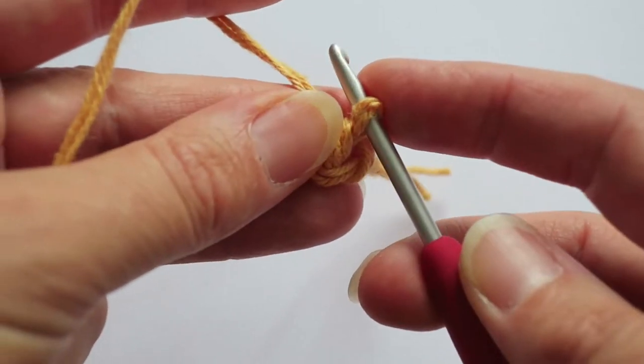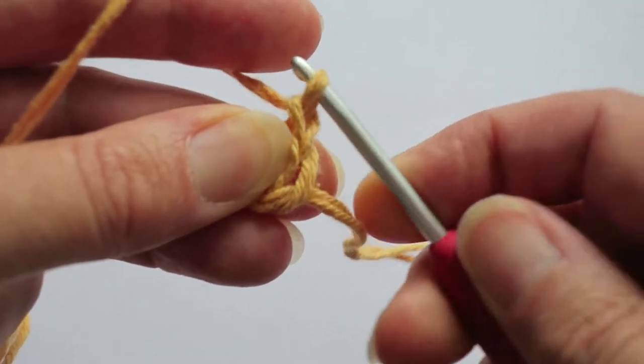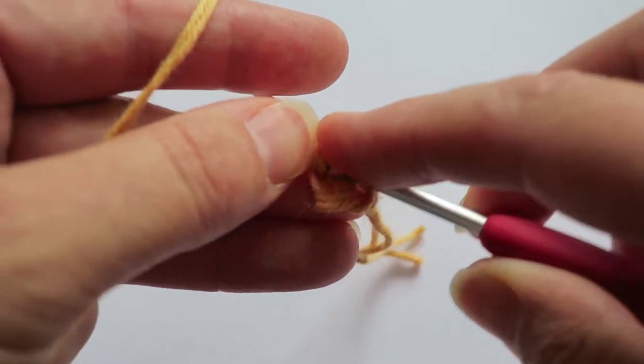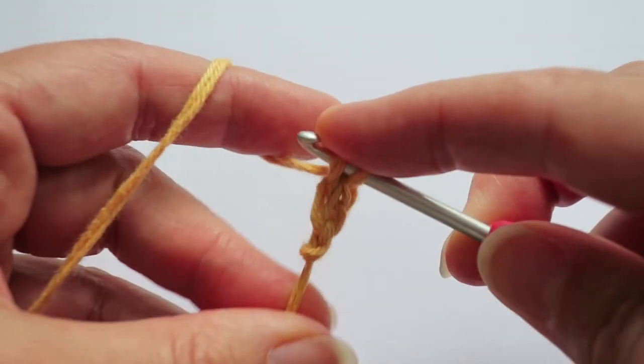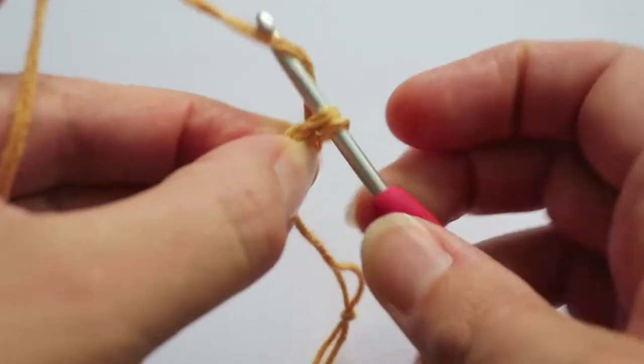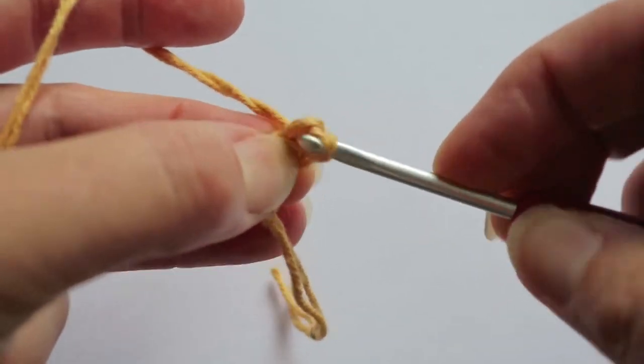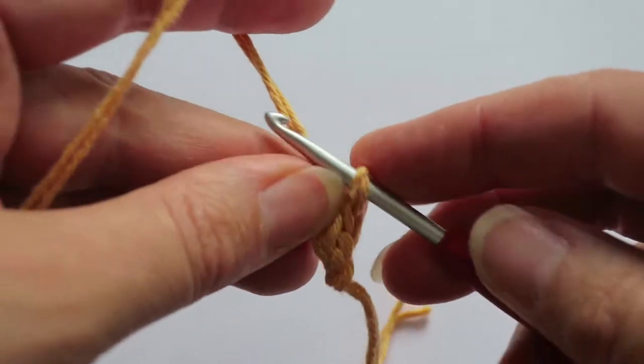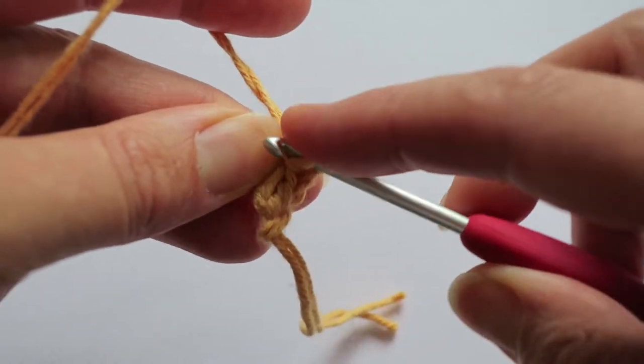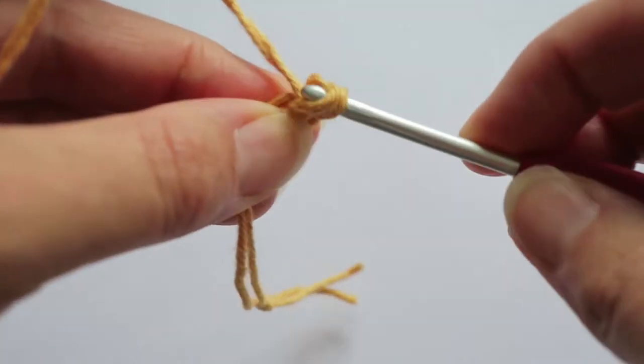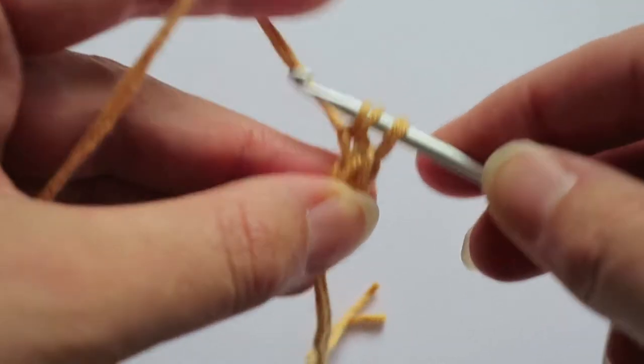First loop off and pinch. Chain the second loop. First loop put back on the hook, chain it. Take it off. Chain the second loop. Just keep repeating that process.